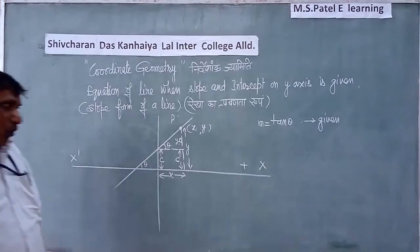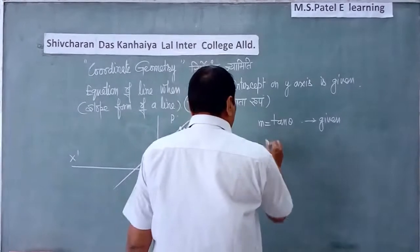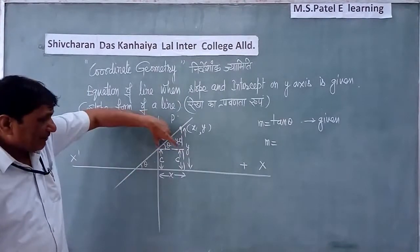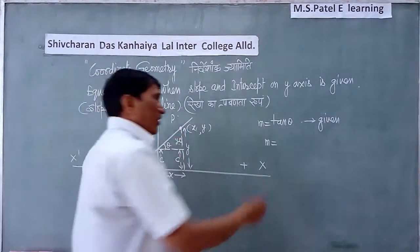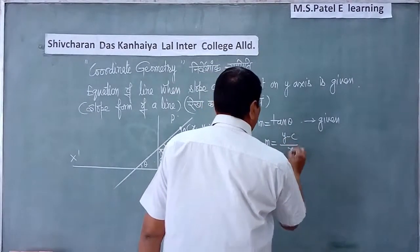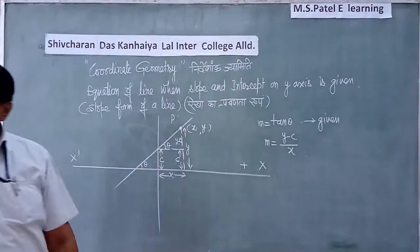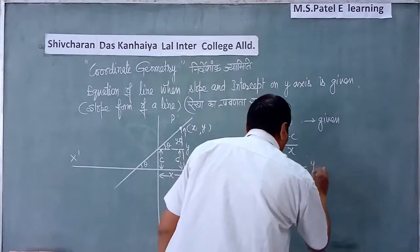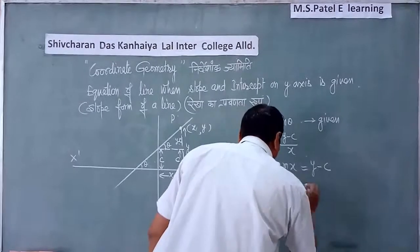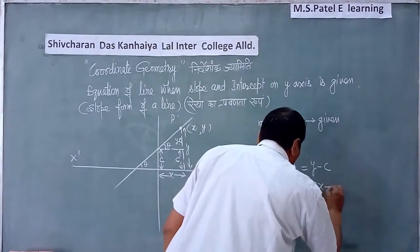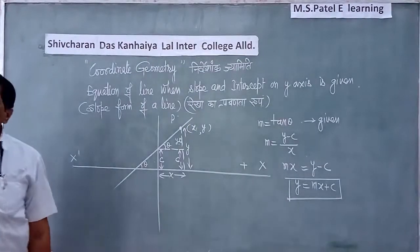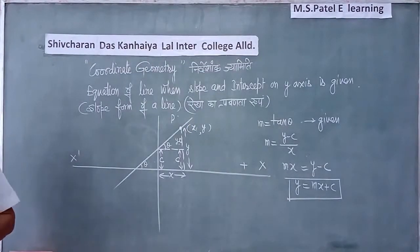Now tan theta, m is equal to what will be the value of tan theta: (y minus c) divided by x. So y minus c divided by x equals m. Cross-multiplying, m into x equals y minus c. Therefore y equals mx plus c. So this is the slope-intercept form of a line, where m is the slope and c is the y-intercept.